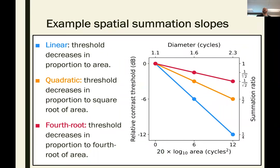Here's the kind of thing we expect to see. On the x-axis we have area, plotted as 20 times the base-10 log of the area — this transformation puts it in the same units (decibels) as the contrast threshold. In the case of linear summation, every time we double the size — a 6 dB step — we halve the threshold. You can get less summation: in the quadratic case, threshold decreases in proportion to the square root of the area, giving a slope of one-half on this double log plot. And we also have fourth-root summation, which has half the slope even of that.